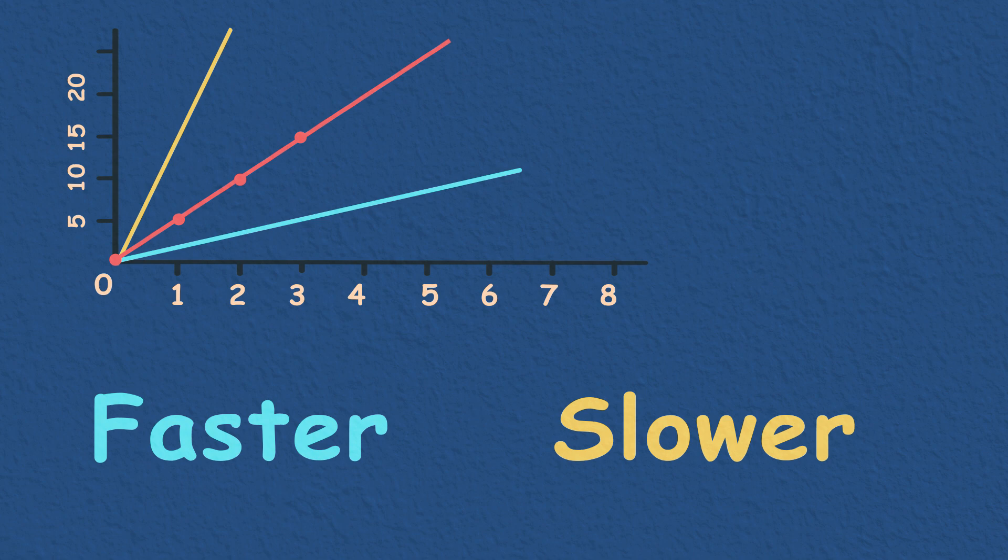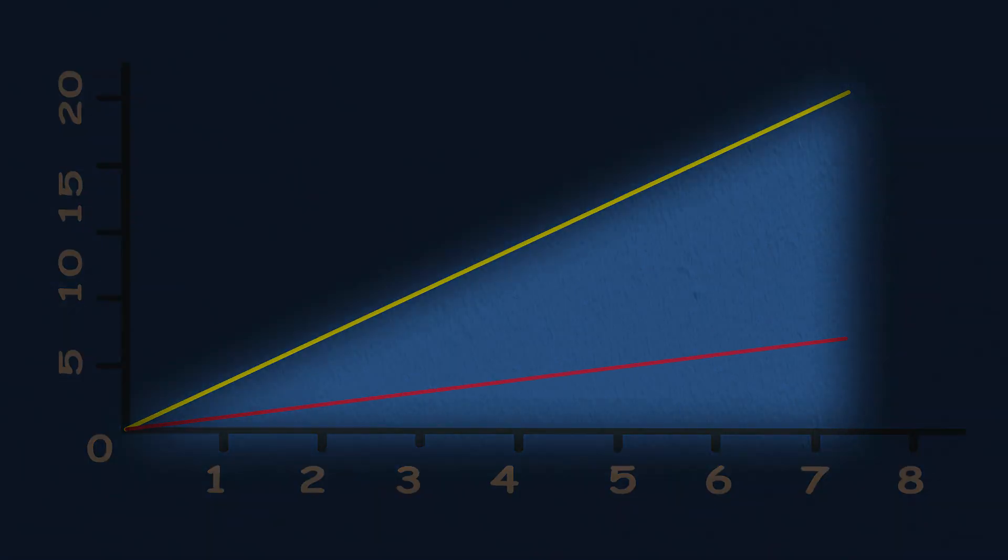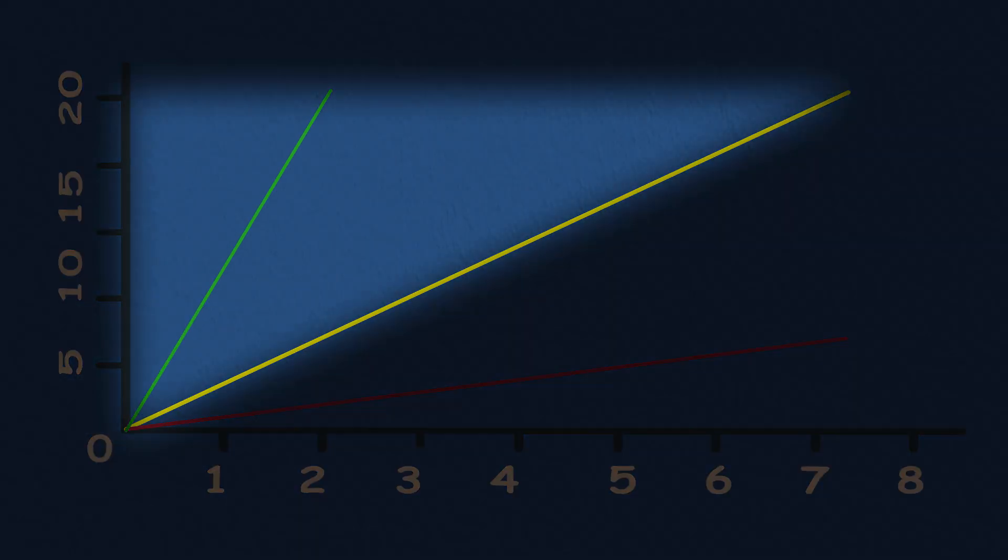Light moves at a speed of 300 million meters per second, and so the world line for light would be much less steep. If this is the world line for light, then anything moving in this section of the space-time diagram is moving faster than the speed of light, and anything here is moving slower than the speed of light.